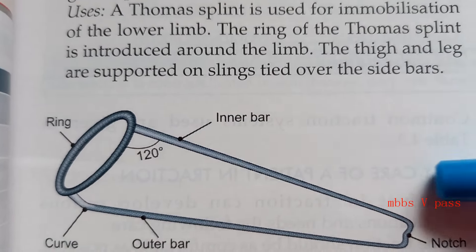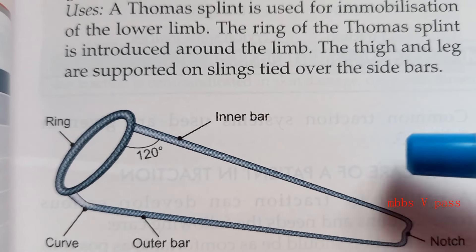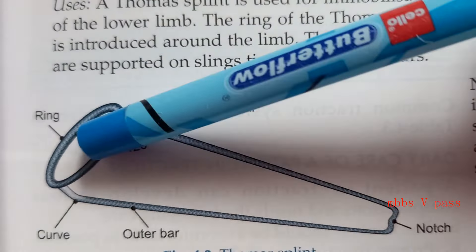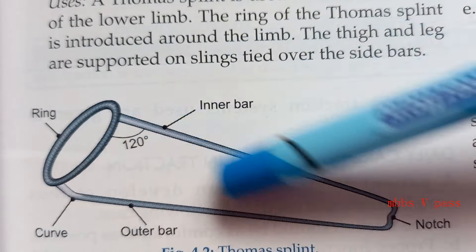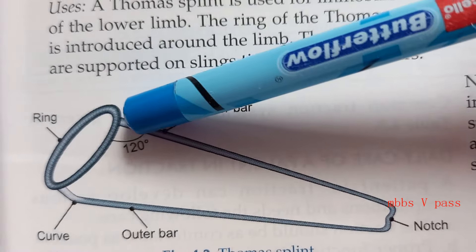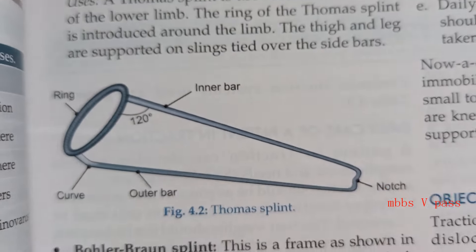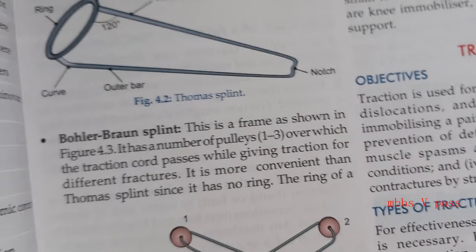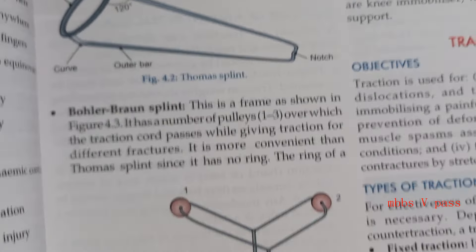Which splint is used for the leg? This ring — you have to put the leg inside it, so it is a little difficult. Yes, Thomas splint. What is the other option? Bohler-Braun splint, right? There is no ring with that one, so it is more convenient.